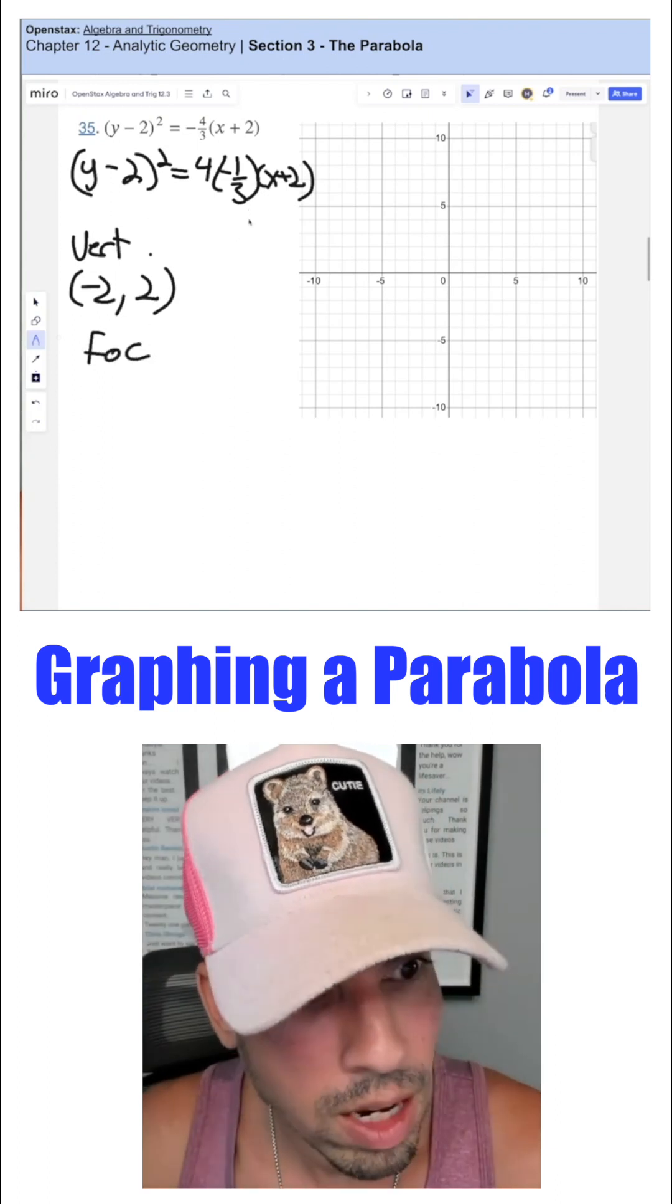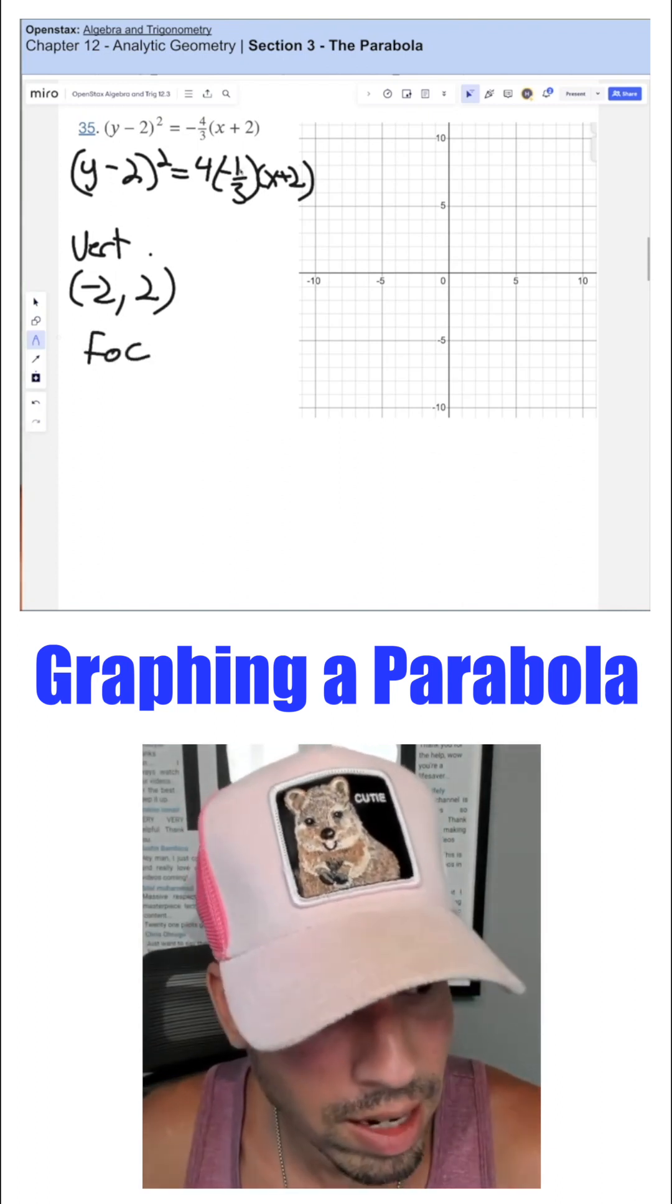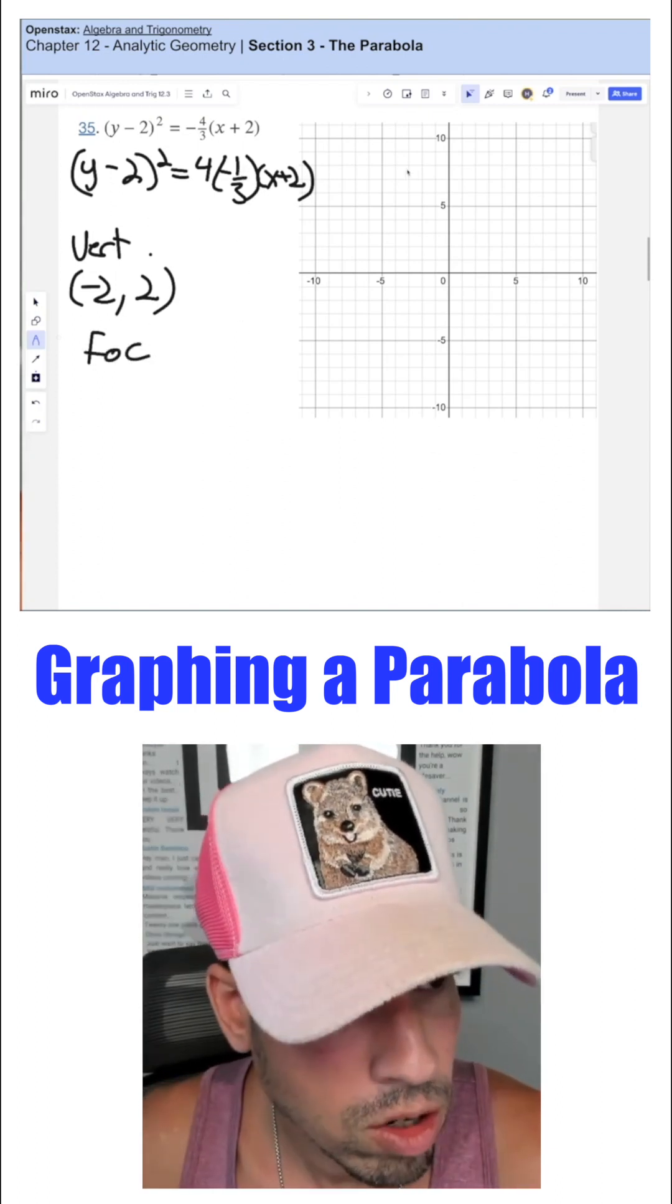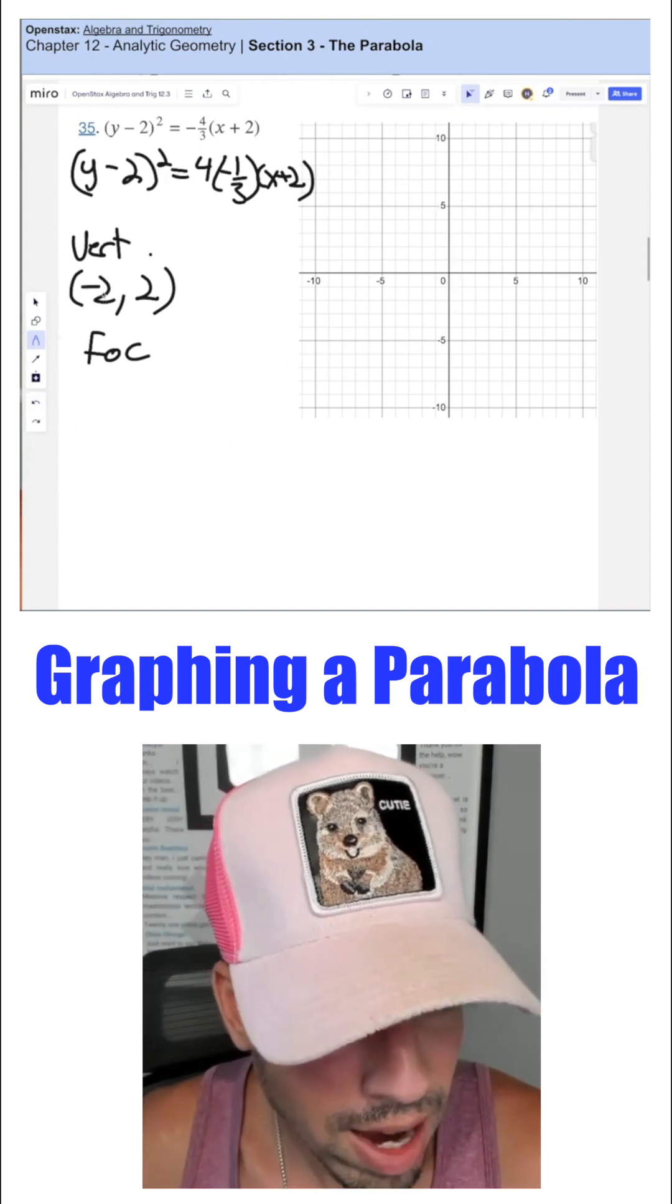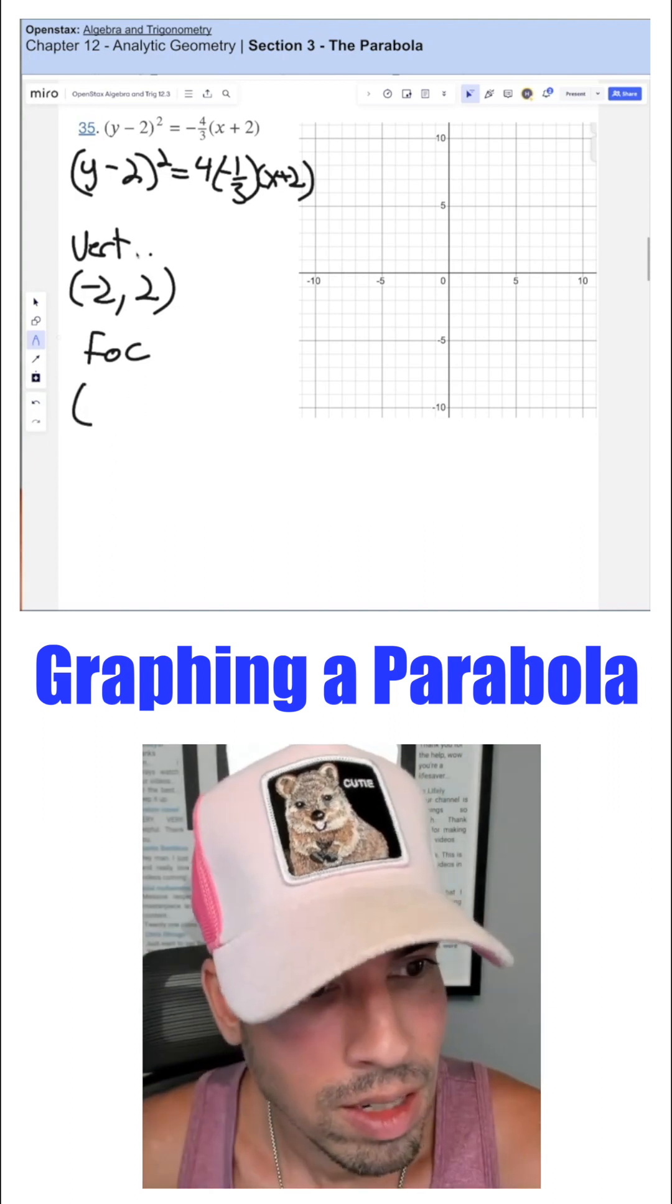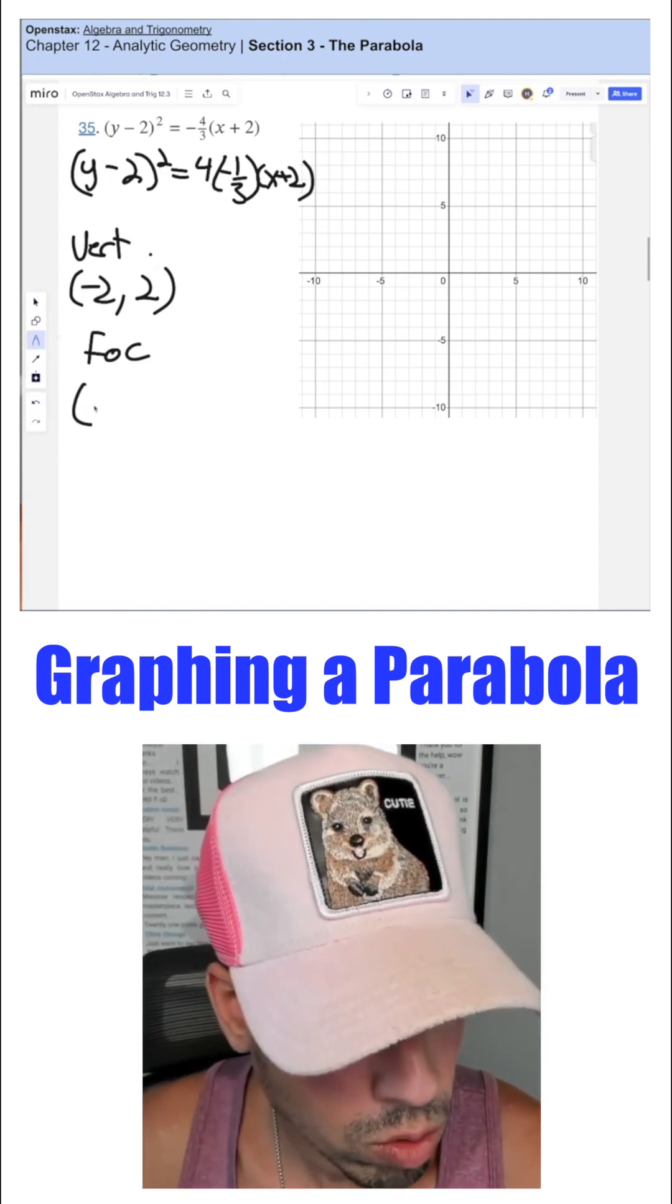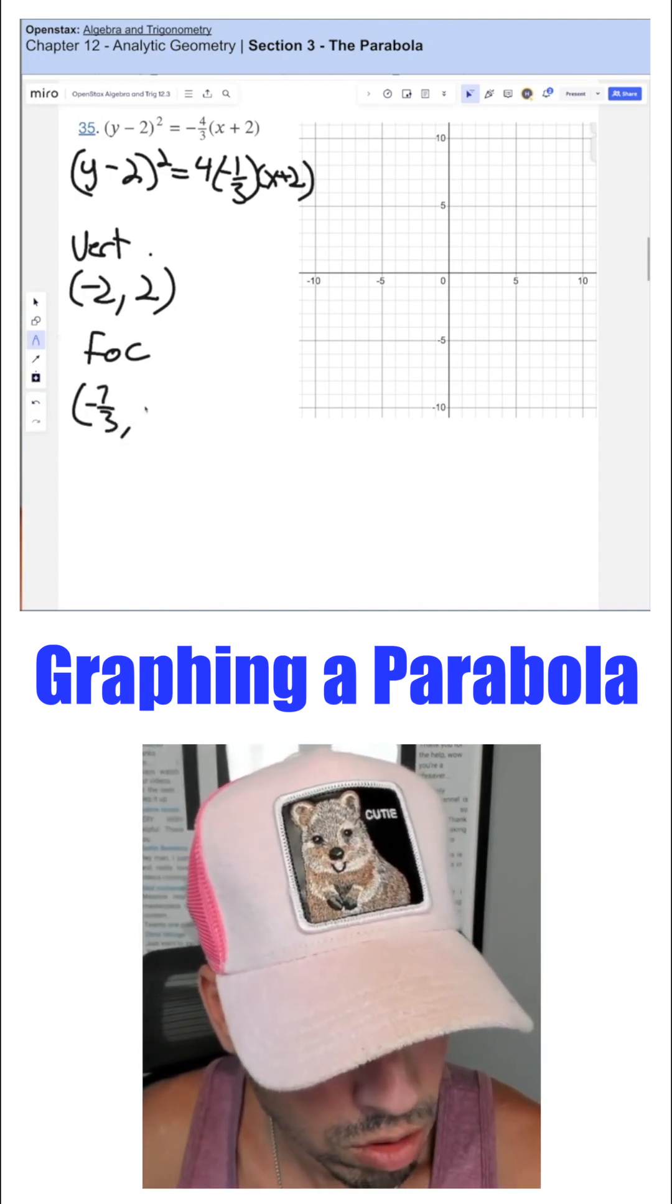And now since my p value is negative one third, and I know it's opening to the left, I'm going to take that negative one third, add it to this x value, and we get negative two and one third or negative seven thirds comma two.